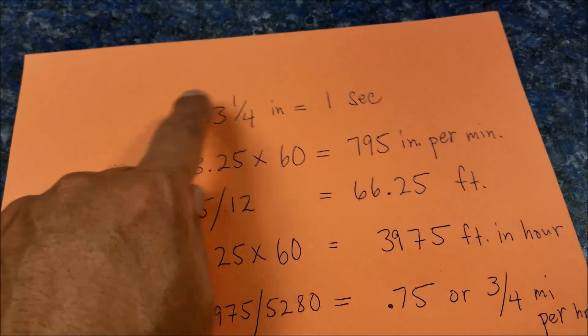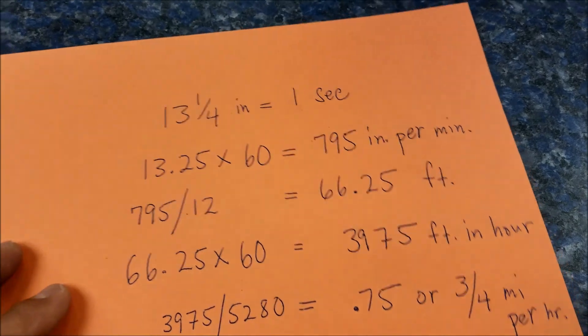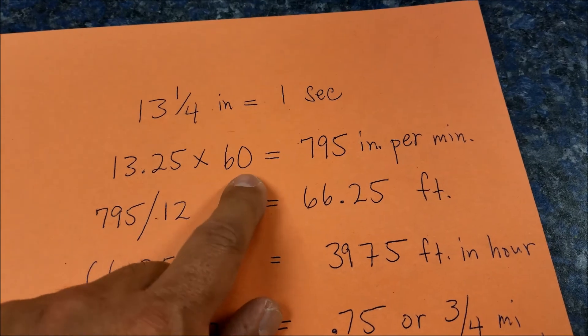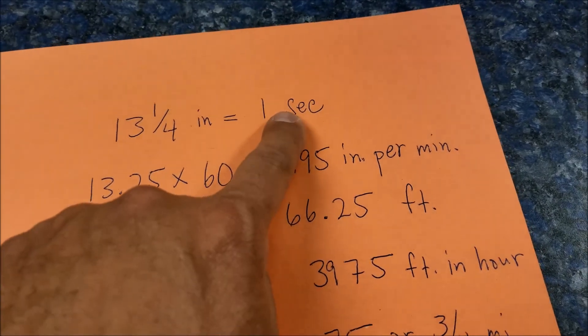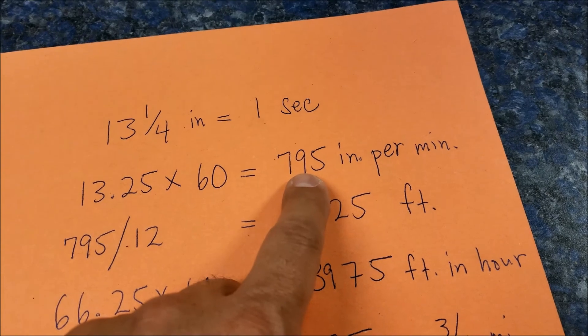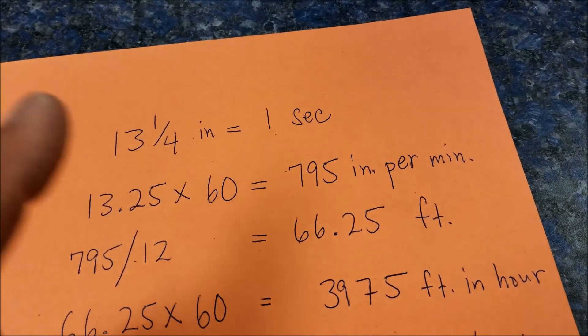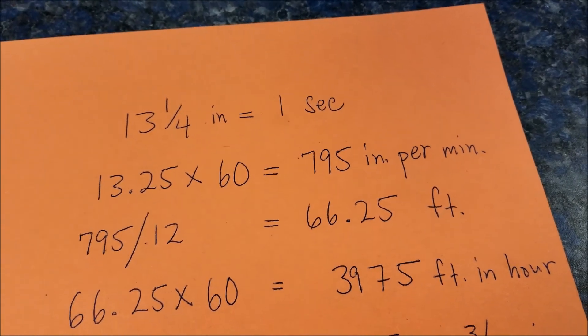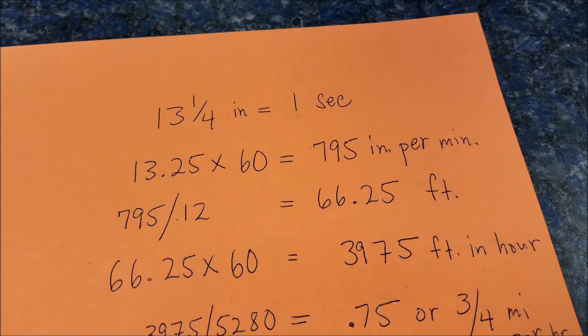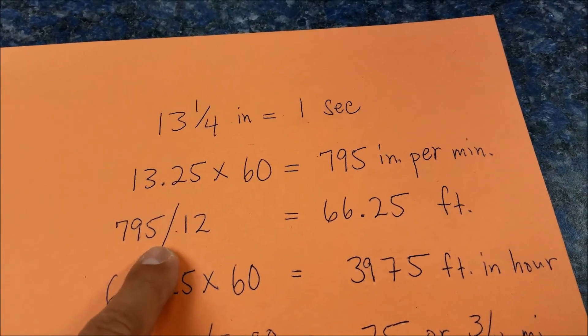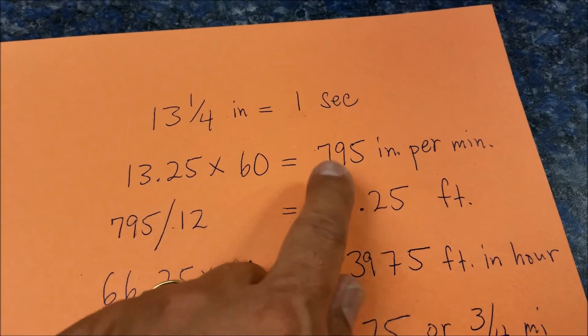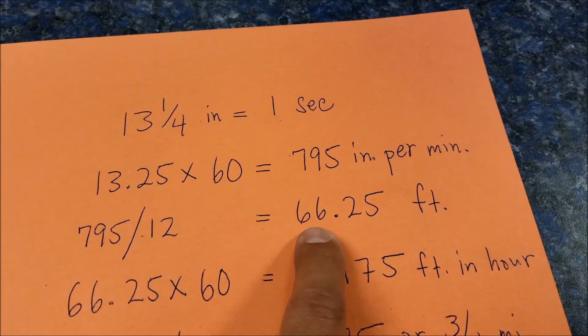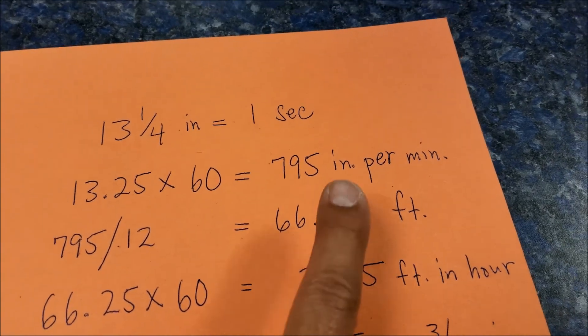We went 13 and one fourth inches in one second. So I took the 13.25 and multiplied that by 60 to figure out how many inches this would go in a minute. So our robot at 100% speed would go 795 inches in a minute. Then I wanted to figure out how many feet would that be per minute. So I took the 795 divided it by 12 and I end up with 66.25 feet per minute.